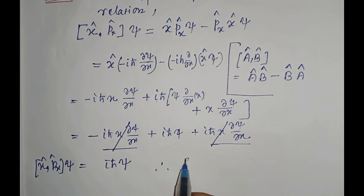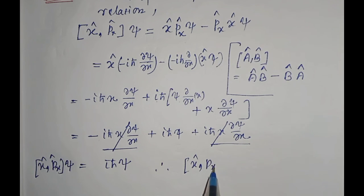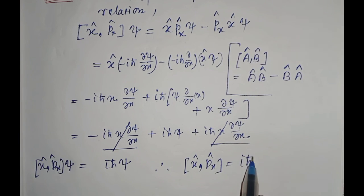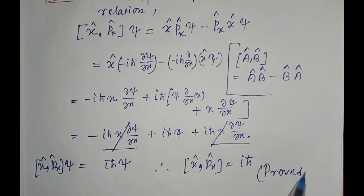The minus and plus terms get cancelled, so we will get iℏψ. Therefore [x, px] = iℏ. Proved.